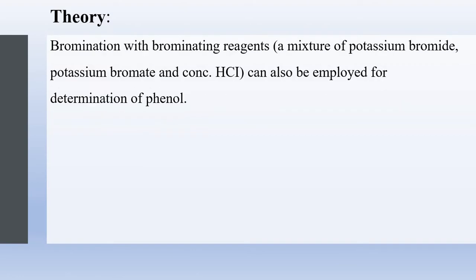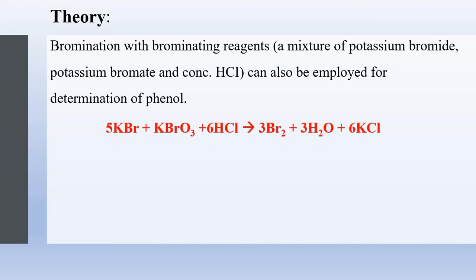Bromination with a brominating reagent — that is, the mixture of potassium bromide and potassium bromate and concentrated HCl — can be employed for determination of phenol. The reaction: when you add potassium bromide and potassium bromate with HCl, there is formation of bromine along with water molecules and potassium chloride molecules.